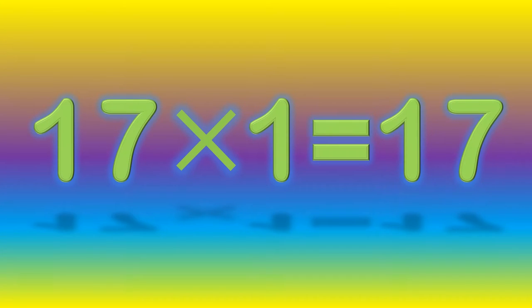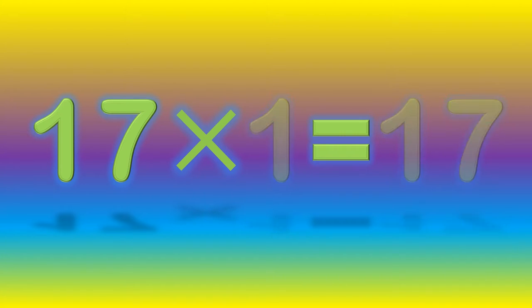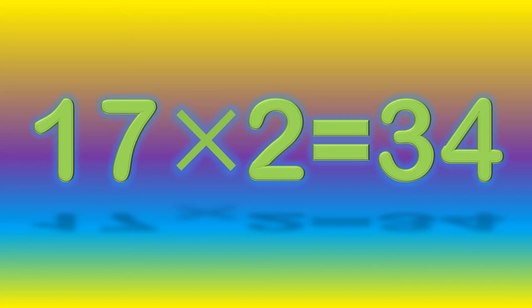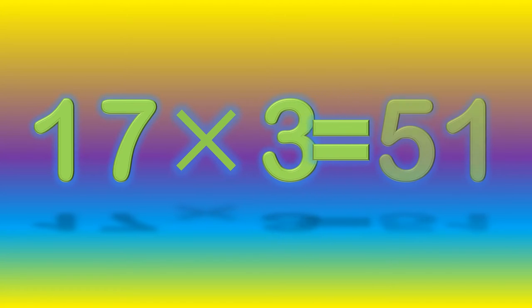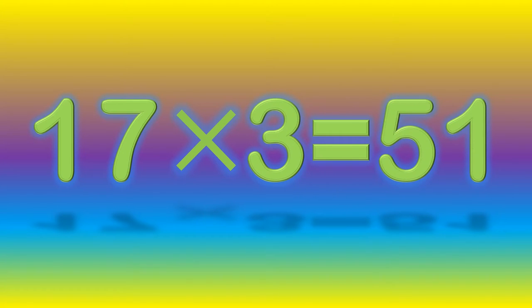17 ones are 17. 17 twos are 34. 17 threes are 51.